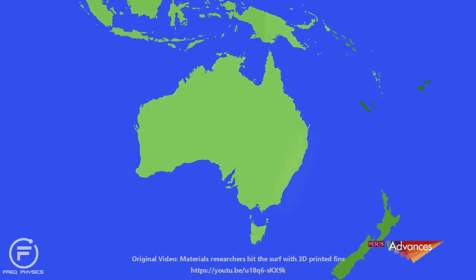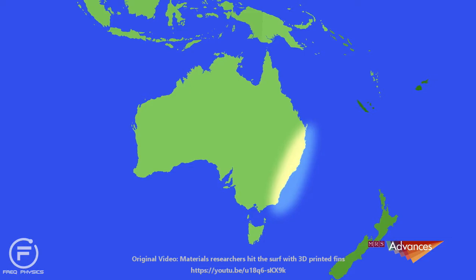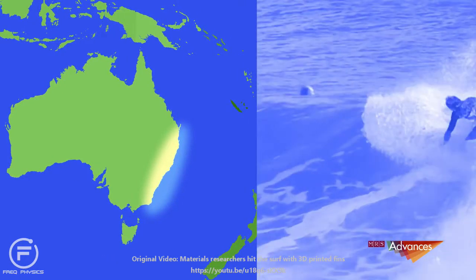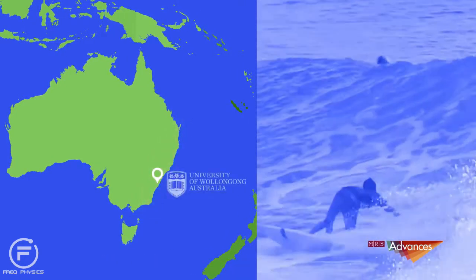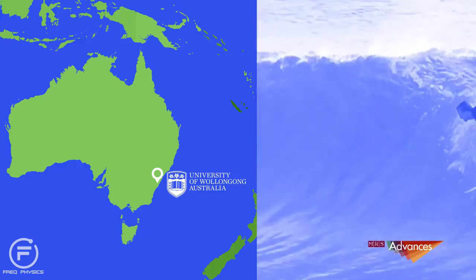Many native Australians would agree that this strip of sunny coastline along the country's eastern seaboard is a surfer's paradise. But to a team of researchers from the University of Wollongong, it's also their laboratory.